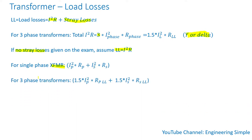For three-phase transformers, the total I squared R is 1.5 times the line current of the primary winding squared times the line-to-line resistance of the primary, plus 1.5 times the line current of the secondary winding squared times the line-to-line resistance of the secondary winding.